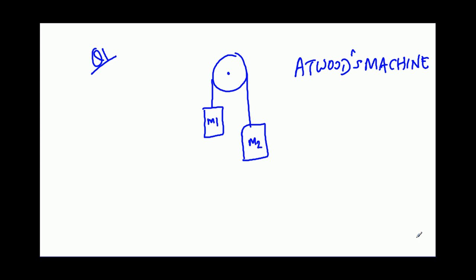The first question is about Atwood's machine. You have masses M1 and M2, a massless pulley, and masses M1 and M2 are attached by a massless string. Find tension and acceleration.